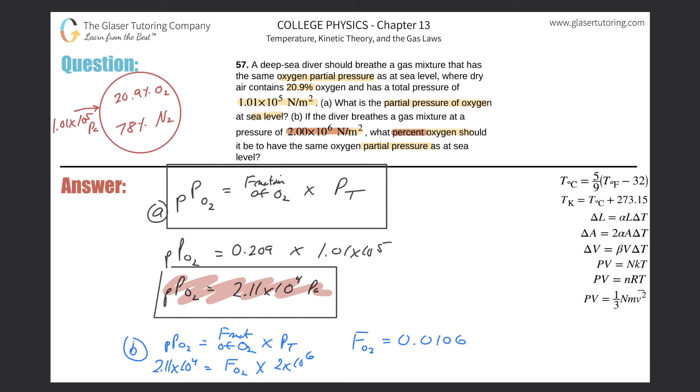And I use rounded numbers, so it might be slightly off, as long as you're close we're good. And then if you had to convert this fraction into a percent, what do you have to do? You have to multiply it by 100. So this would now work out to be 1.06%. So this is the percent of oxygen that must be in this total.